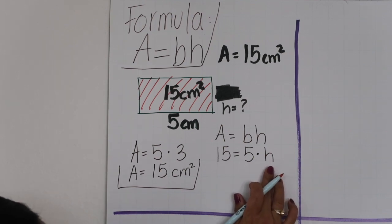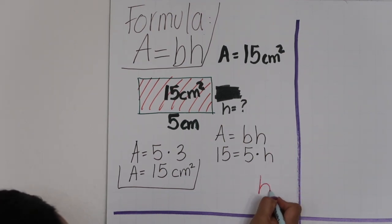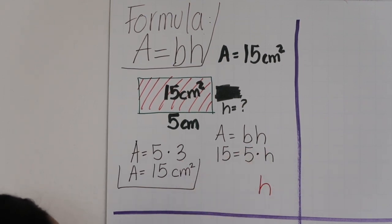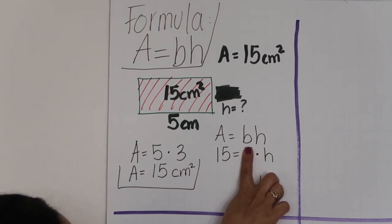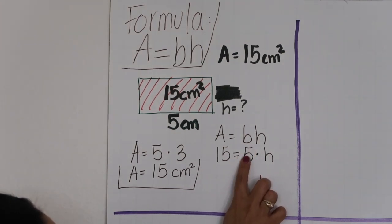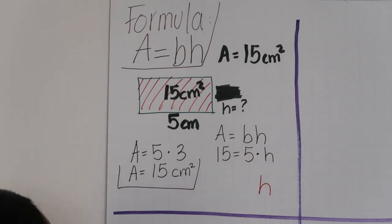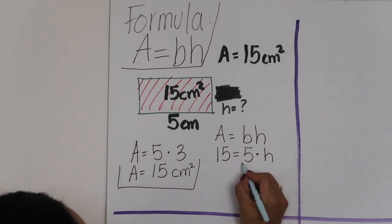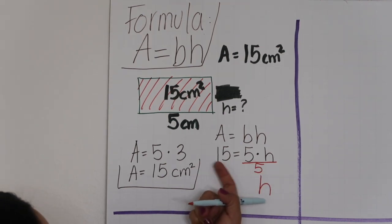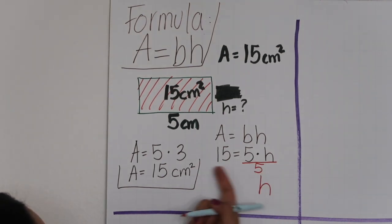To isolate the letter H, we're going to have to get rid of the 5, so that we have H equals a value. We're going to have to do the opposite operation. The opposite of multiplication is division, so we're going to divide by 5. And we have to do it on both sides to balance the equation.